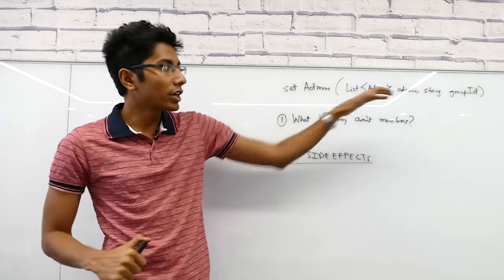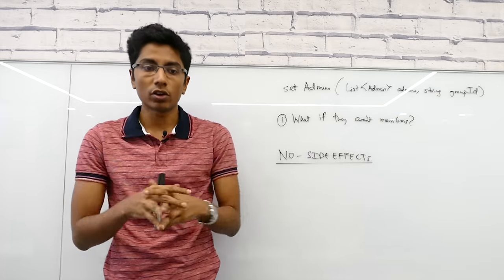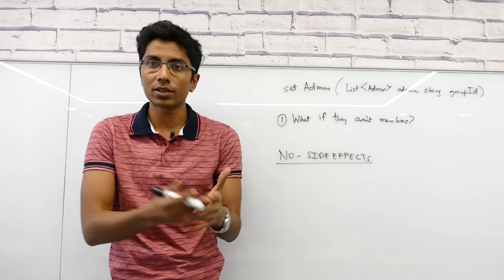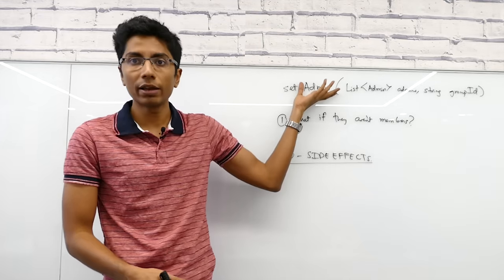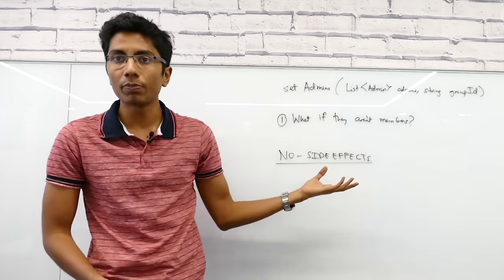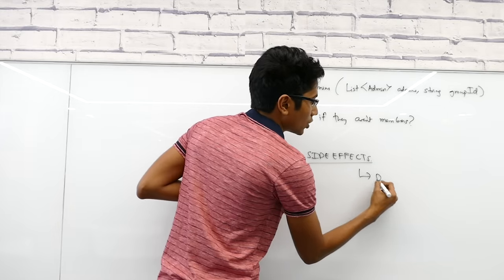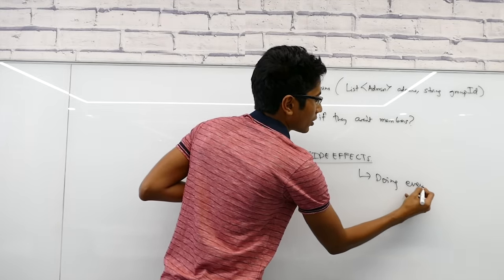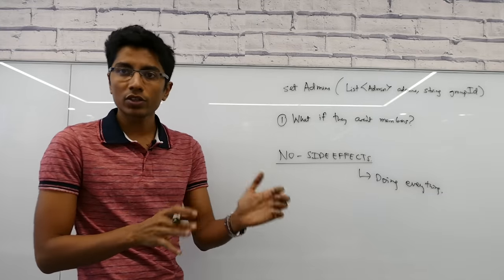Your API should have no side effects. If there are multiple operations that your single API is doing, if there are a lot of flags you're setting, if there's almost a config object that you're passing into the API which is setting its behavior, that's a really weird API and maybe you should break it into multiple APIs. That's the first reason for side effects: doing everything in one function.